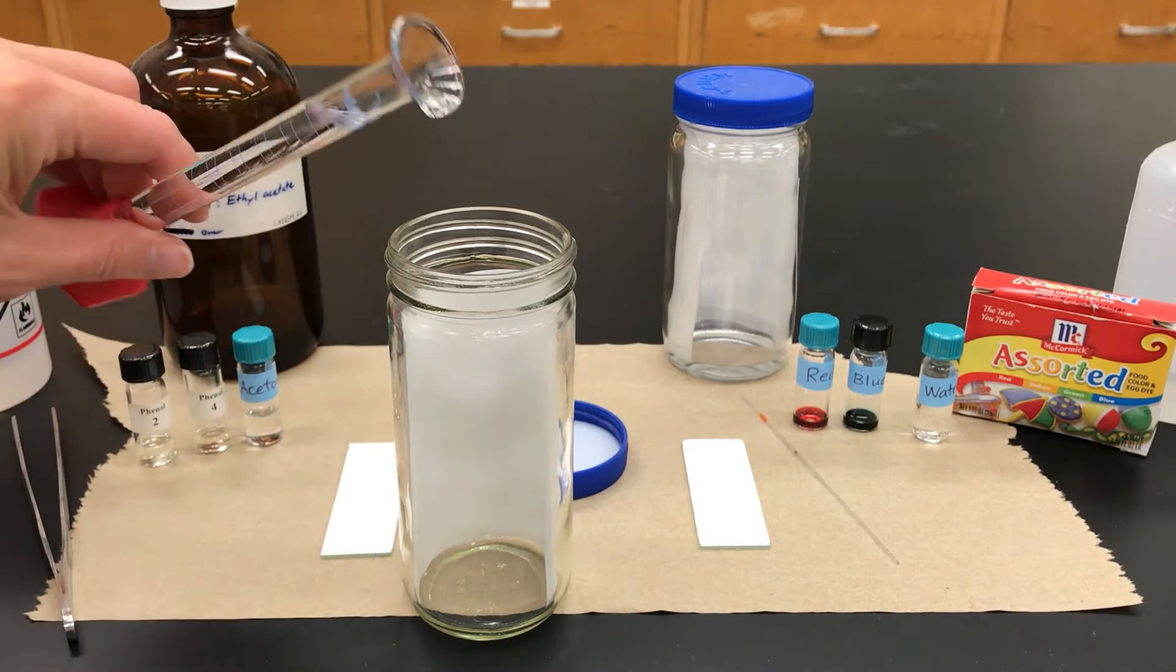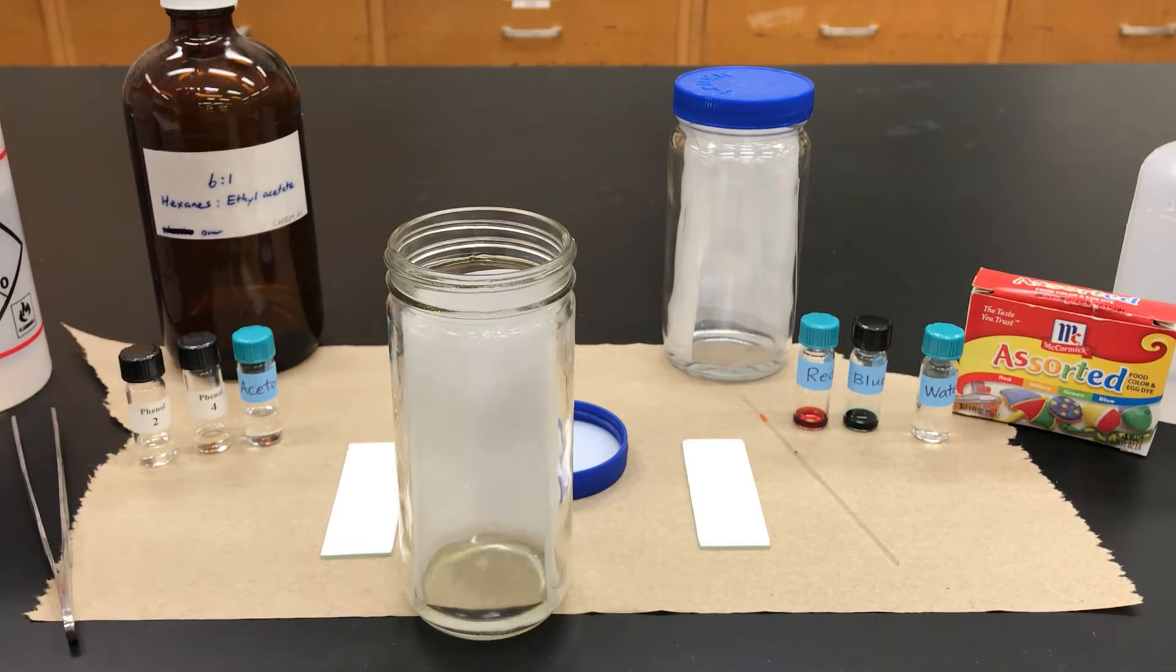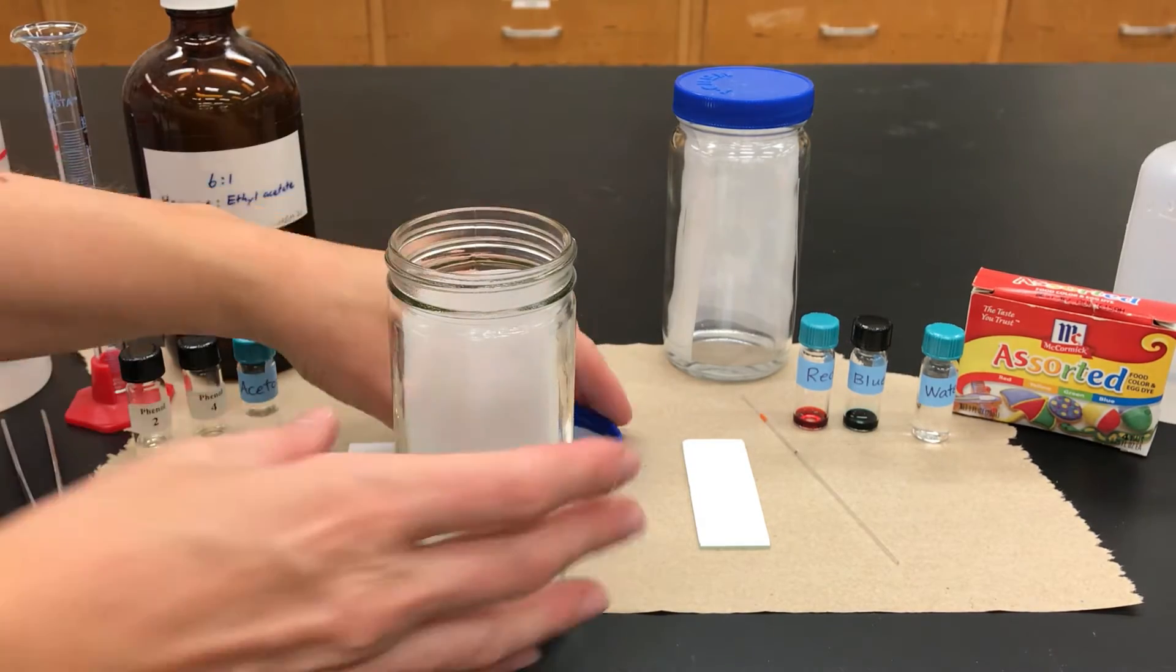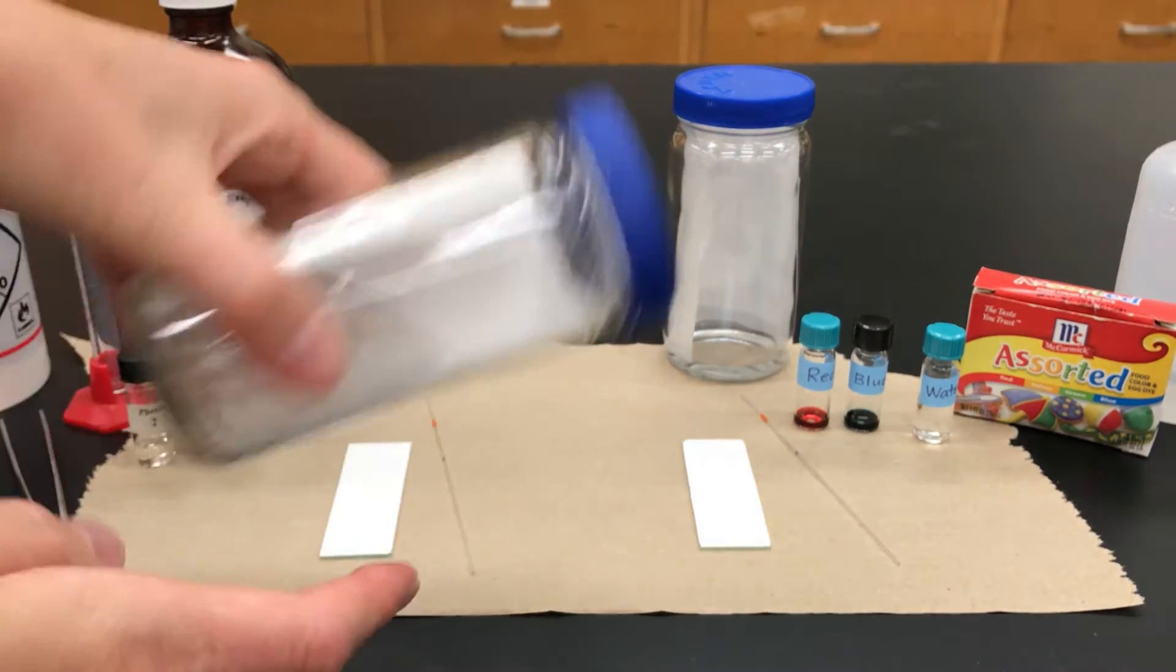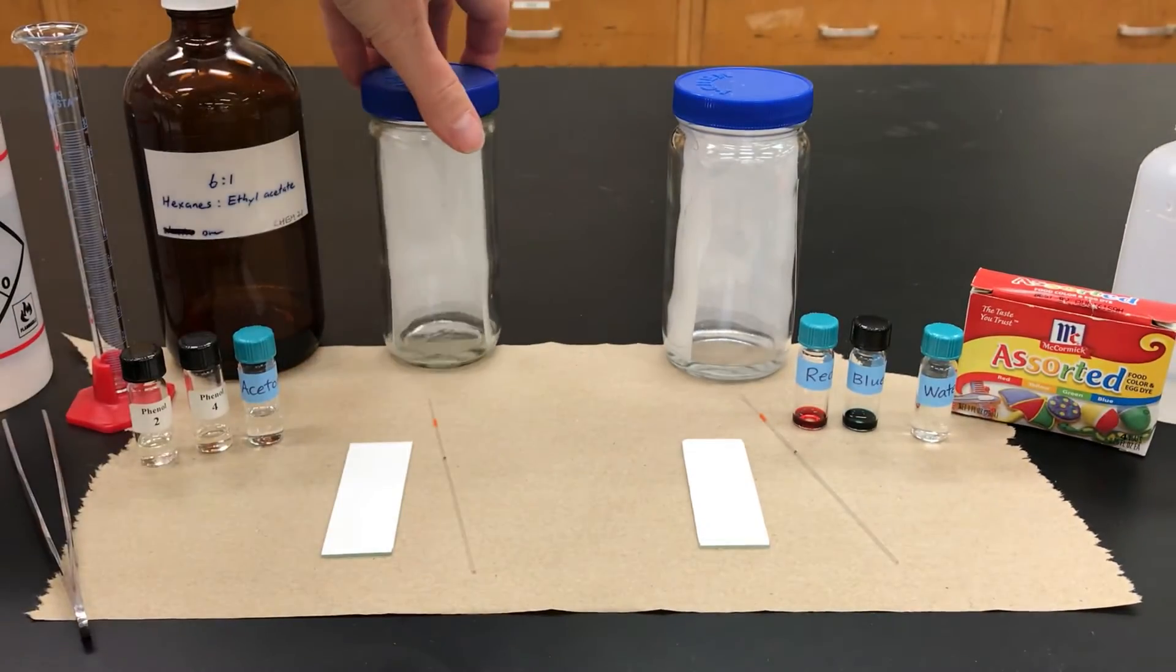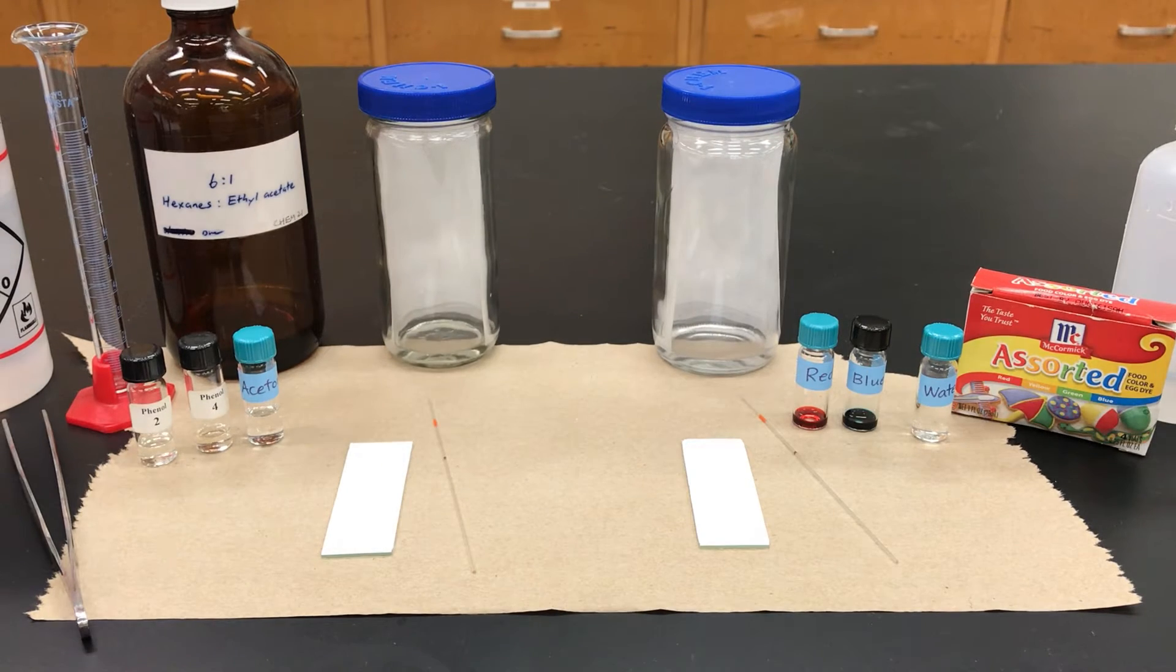In the second one, I'm doing a 6 to 1 volume ratio of hexanes and ethyl acetate. TLCs run with different solvents. It's something that you have to write down because that's a variable that you can change. So my chambers are ready. I'm going to leave those off to the side.